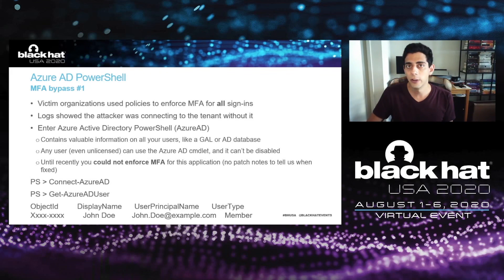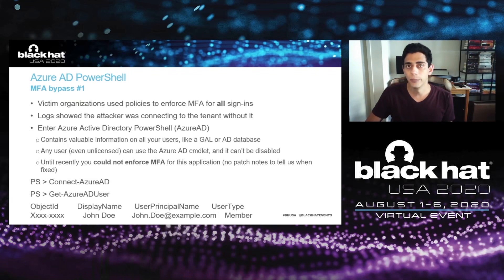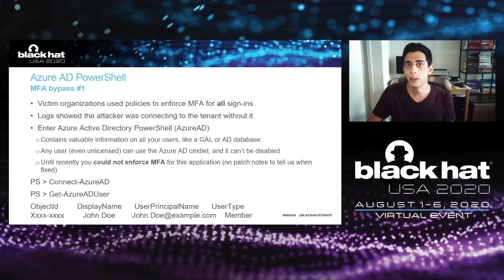Through some initial testing, we couldn't exactly figure out how until we started looking at the Azure AD audit logs and the unified audit log. We found that the attacker was using a PowerShell module called Azure Active Directory PowerShell, or Azure AD. This module gives programmatic access to Azure Active Directory, which contains sensitive information including users, groups they're in, and other overarching information about the organization. What's interesting about this particular PowerShell module is that any user — even an unlicensed user — can access it, and you actually can't disable it. Unlike Exchange Online PowerShell, there's no setting to disable this module. And what's even more interesting is that this module did not go through conditional access — it would completely bypass conditional access policies.